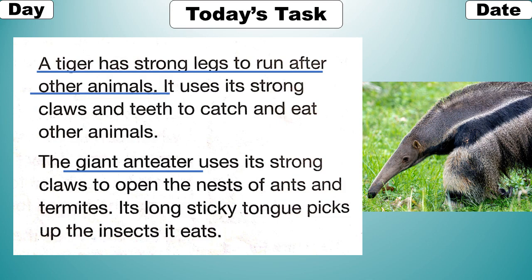The giant anteater uses its strong claws to open the nests of ants and termites. Its long, sticky tongue picks up the insects it eats. Giant anteater wo animal hai jo apne claws se ants aur termites ke nest ko kholta hai. Iski tongue long aur sticky hoti hai jis se wo insects ko pakad kar khaata hai.